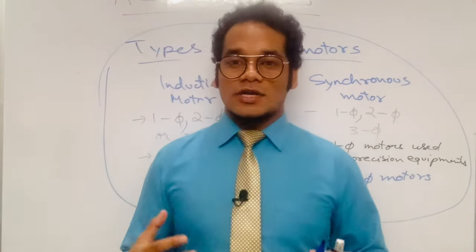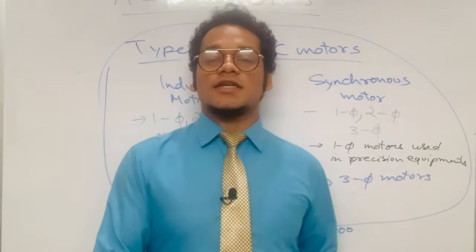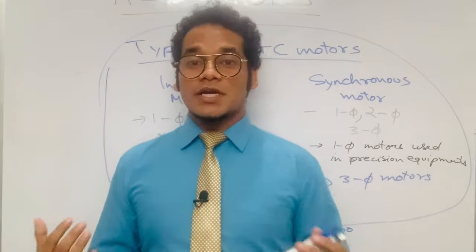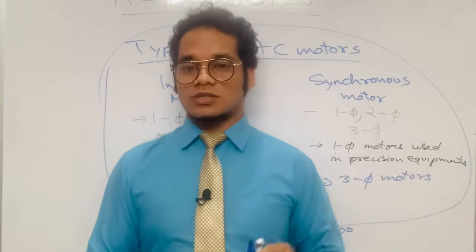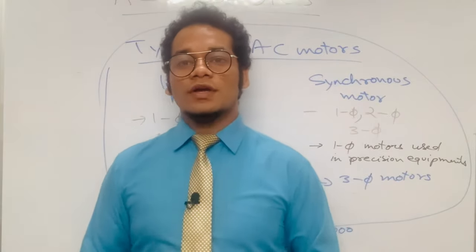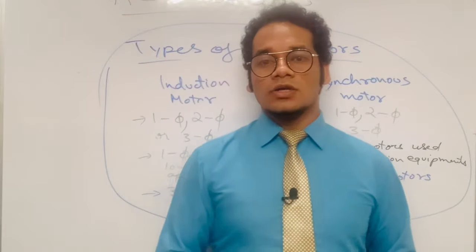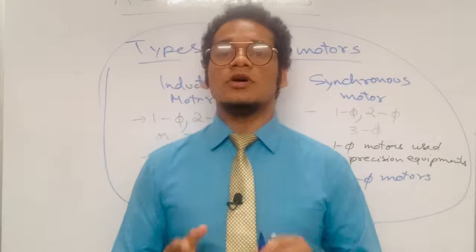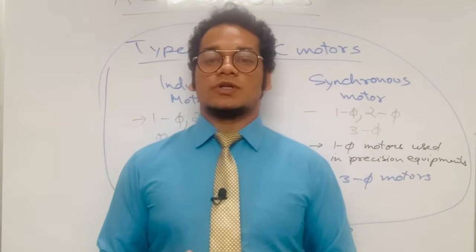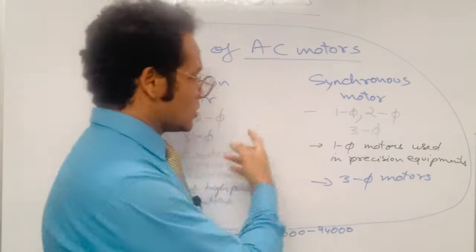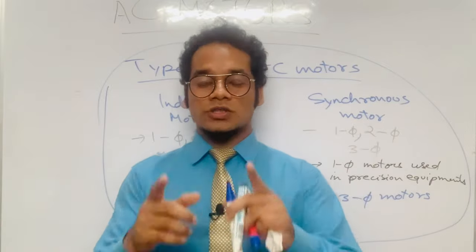To summarize: an electrical motor converts electrical energy into mechanical energy. AC motors produce more power for less weight compared to DC motors. We discussed the advantages of AC motors, the speed of rotation formula (RPM = 120 × f / number of poles), how AC motors are rated, and the types of AC motors used in aircraft. In the next session, we'll discuss induction motor and synchronous motor construction and working in detail.